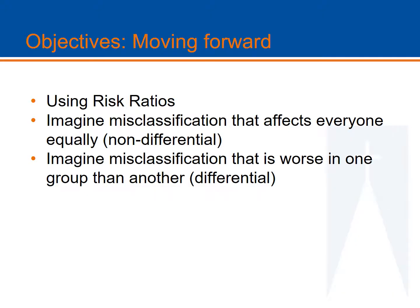The objective is to show you how to apply the concept of misclassification that does not differ, i.e., is non-differential, between groups. In this lecture, I will show you that non-differential misclassification will alter a risk ratio or an odds ratio to attenuate the effect. In other words, a risk ratio or odds ratio will go towards one.